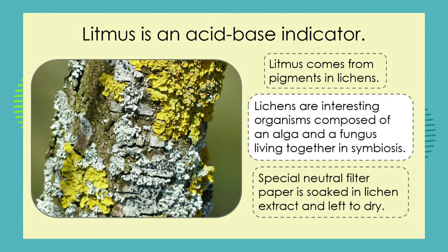These little indicator substances are often quite fun to experiment with. Today we're going to learn about a very simple indicator substance called litmus. Litmus is what we call an acid-base indicator, and it's a substance that comes from the pigments or dyes in a very interesting organism called a lichen — spelled L-I-C-H-E-N, but pronounced 'lyken'.